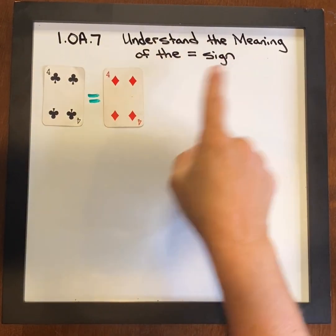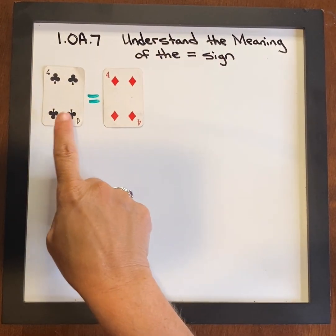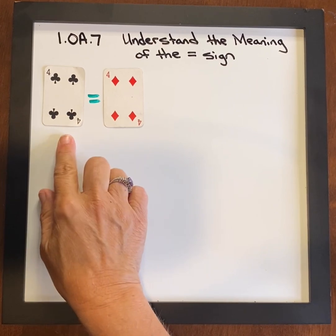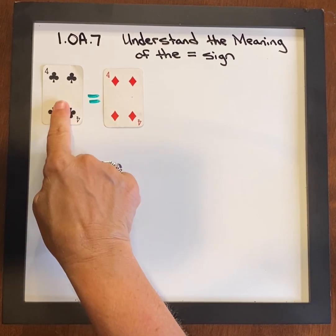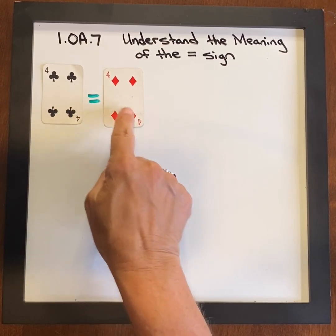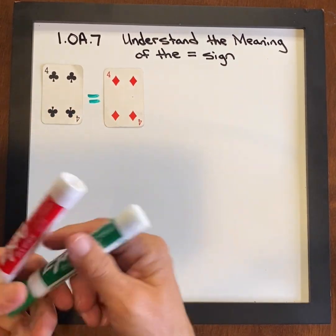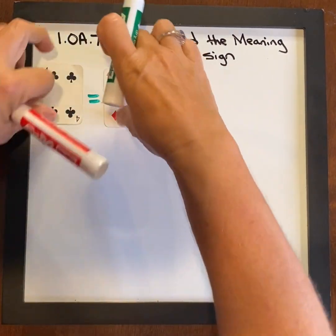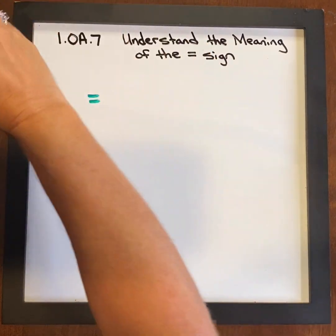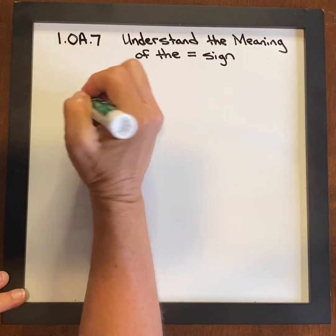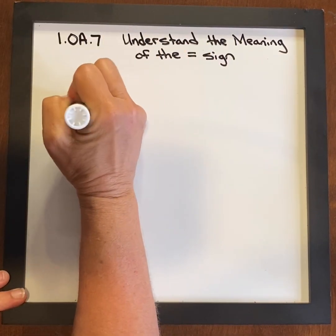When we talk about understanding the meaning of the equal sign, we're talking about the amount on this side being the same as this side. So students can write 4 equals 4. That is a true equation.